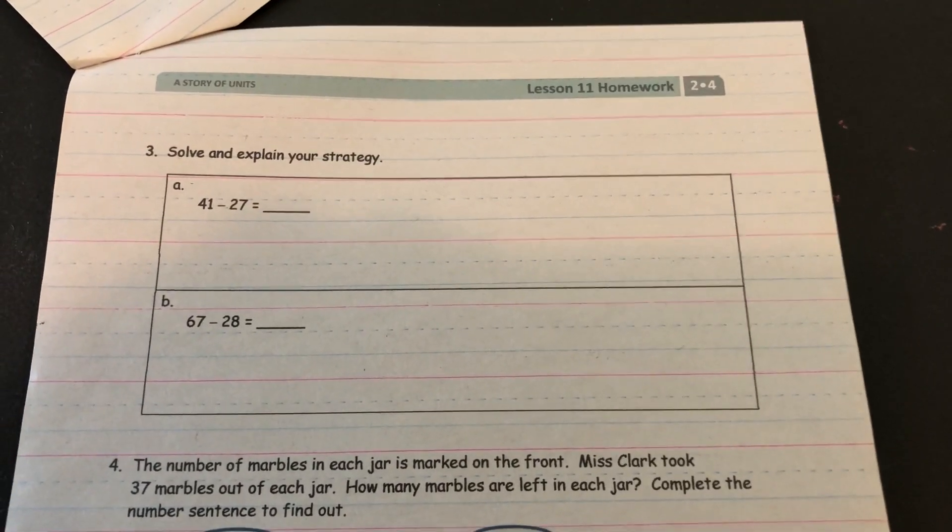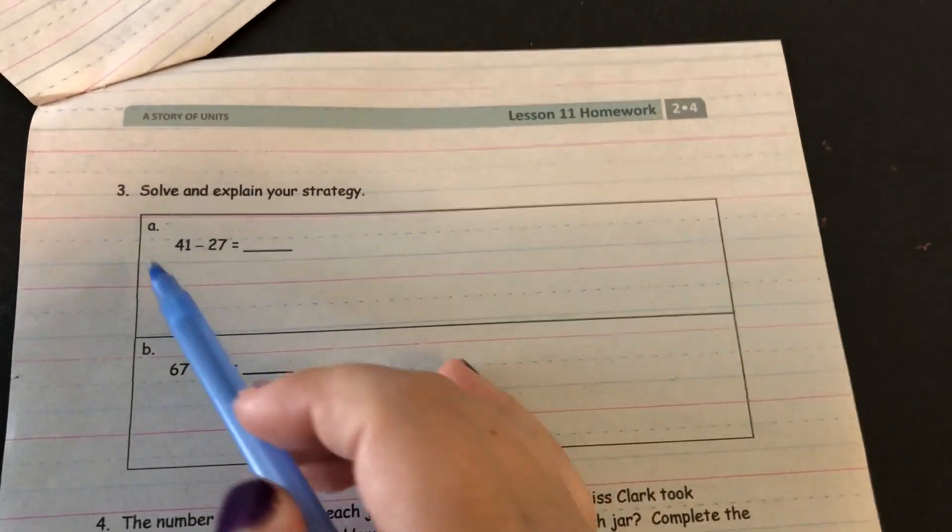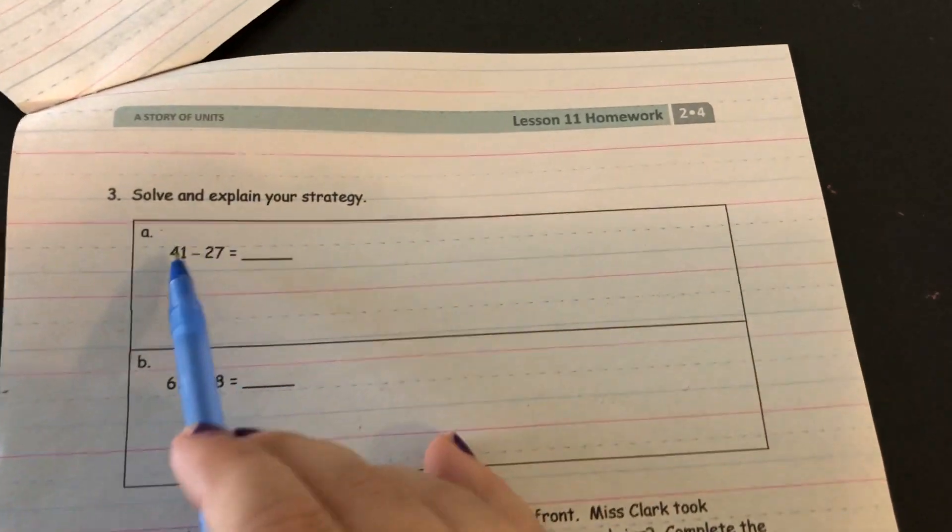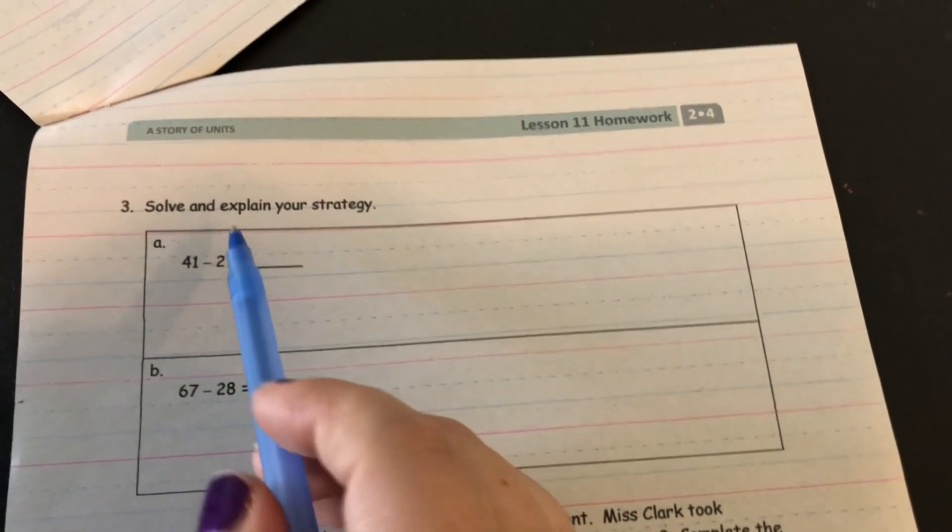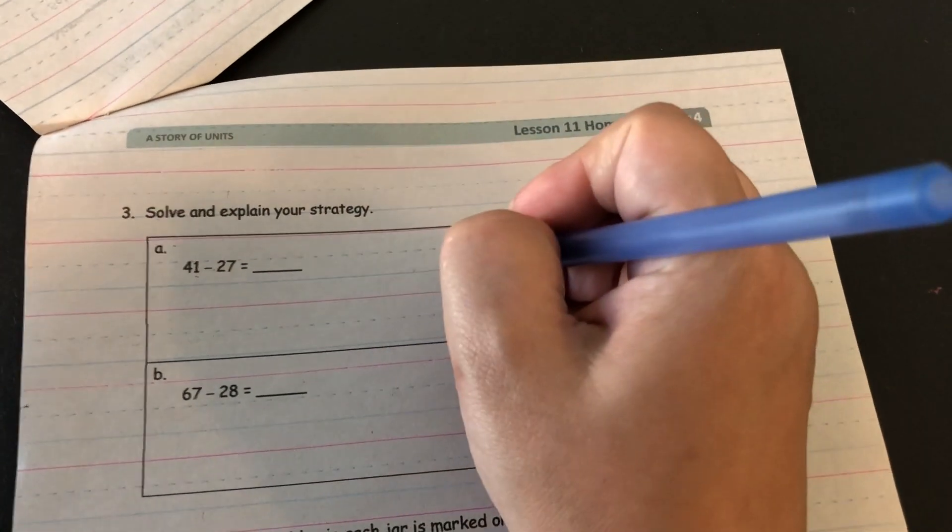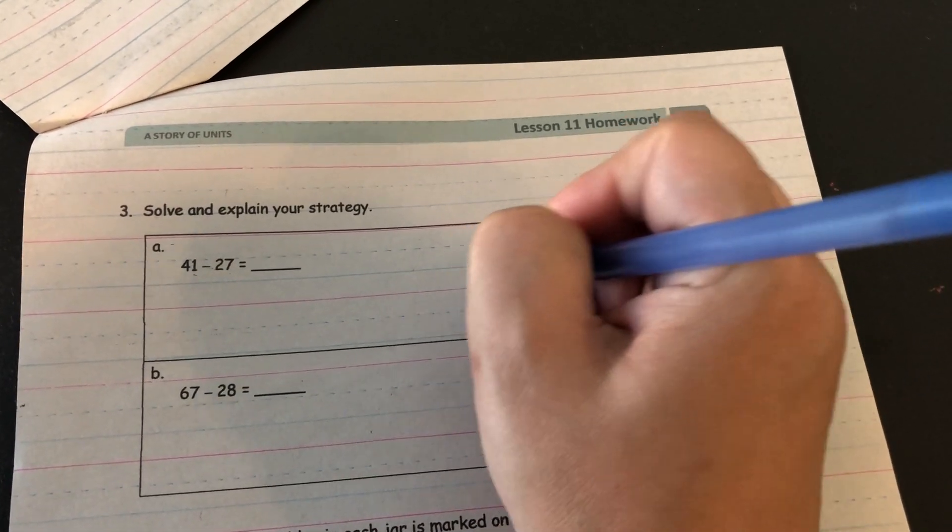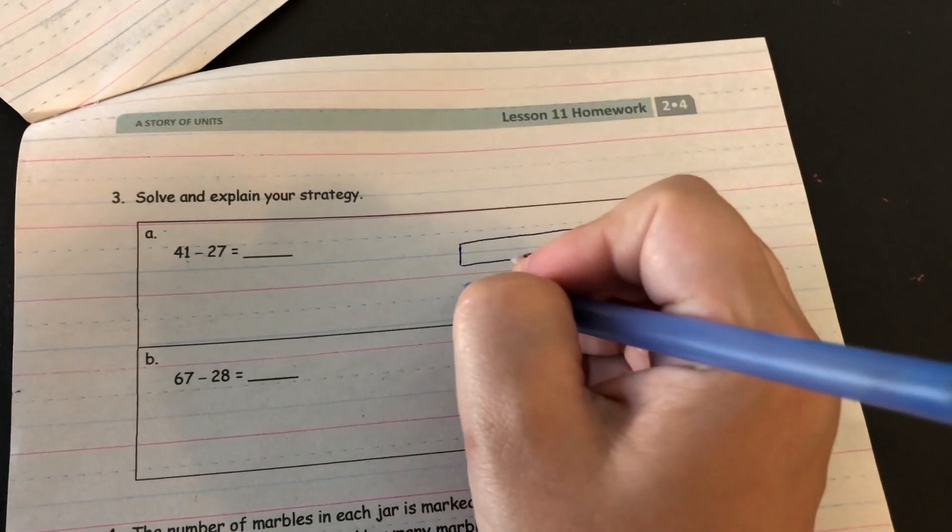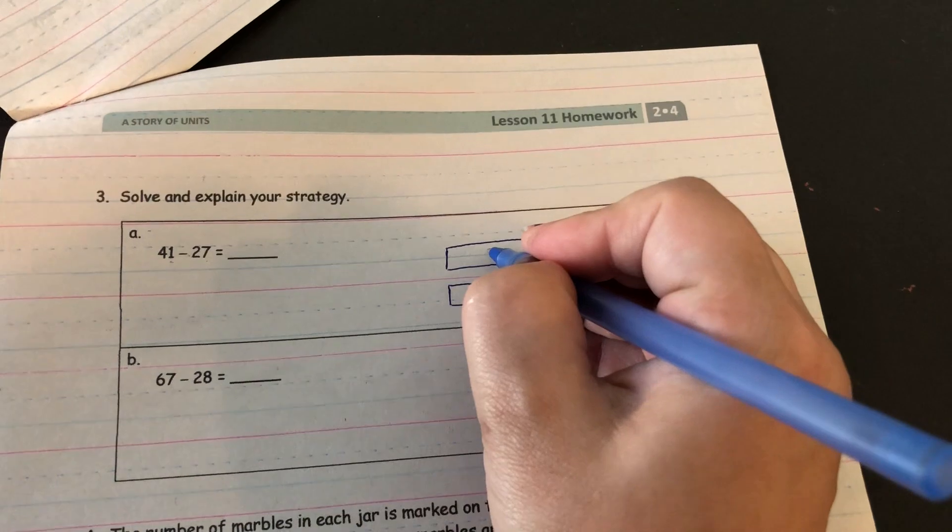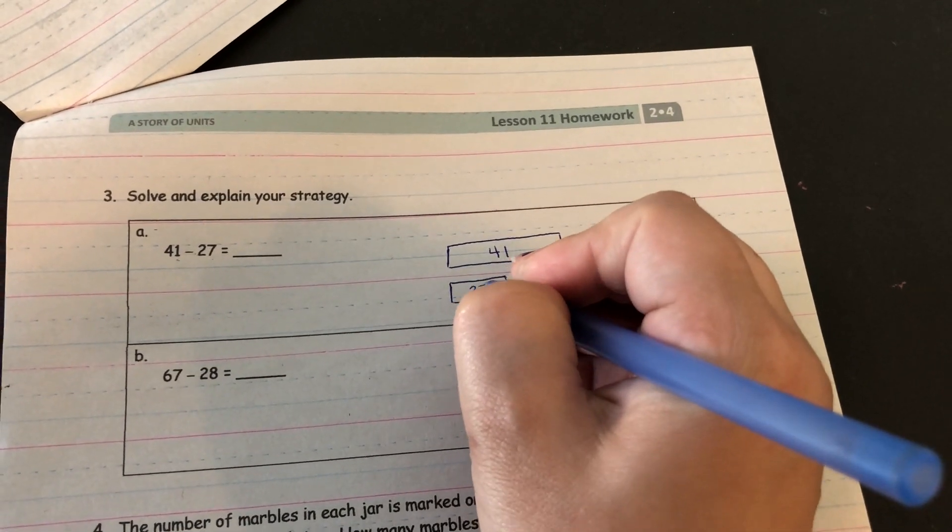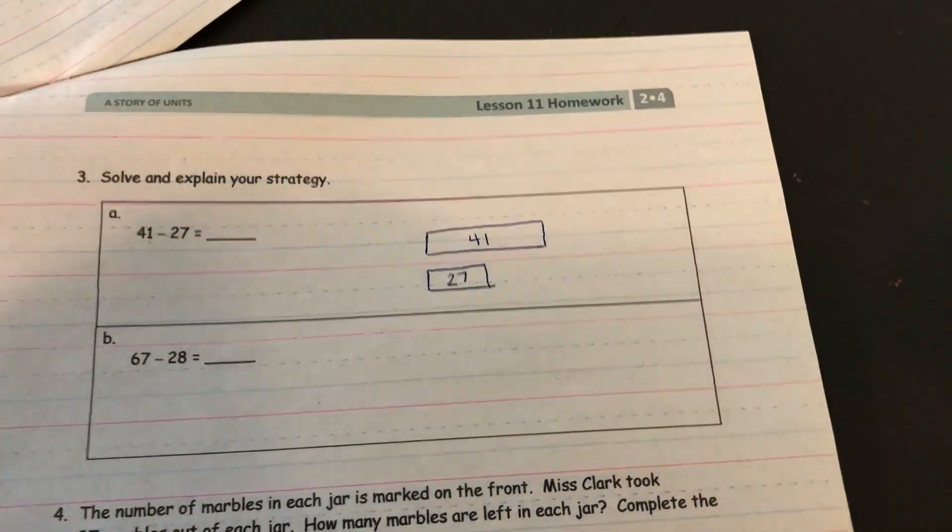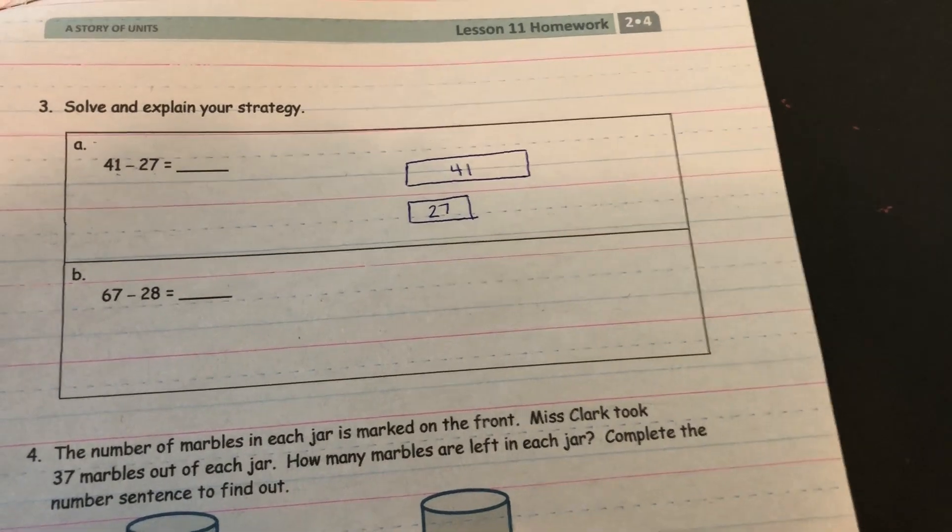So I will start with, I'll do a tape diagram. So if I want to do 41 minus 27, first I check, can I do one one minus seven ones? No. So I'm gonna do a tape diagram strategy and remember you don't have to use this strategy, this is just the one that I'm choosing to use.